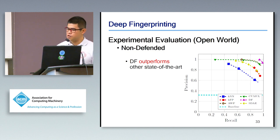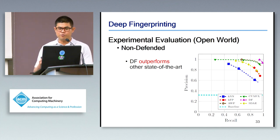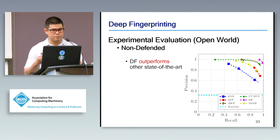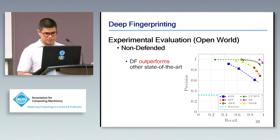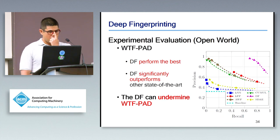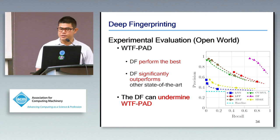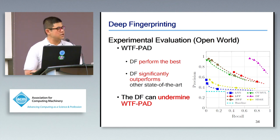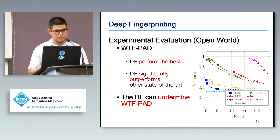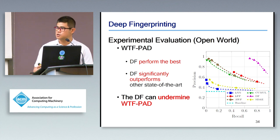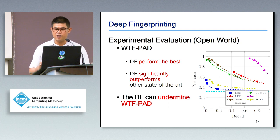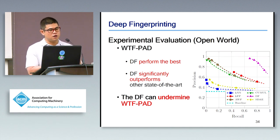In the more realistic open-world scenario, the DF model performs better than other website fingerprinting attacks as measured by precision and recall — the closer to the top right of the graph, the better. Against WTF-PAD in open world, there is a reduction in both precision and recall for all attacks; however, the DF attack still performs significantly better than others. With the high precision and recall the DF attack achieves, an attacker can effectively identify that a user has visited a particular monitored website with very high confidence — which is directly dangerous to user privacy.